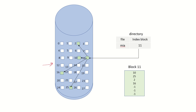For example, there is a file called mia and its index block is block number 11. Block 11 is the index block, and the other blocks are the data blocks where the data is stored. This index block holds pointers to all these data blocks. What is actually stored in block 11 are the pointers to the data blocks — for example, a pointer to data block 10.